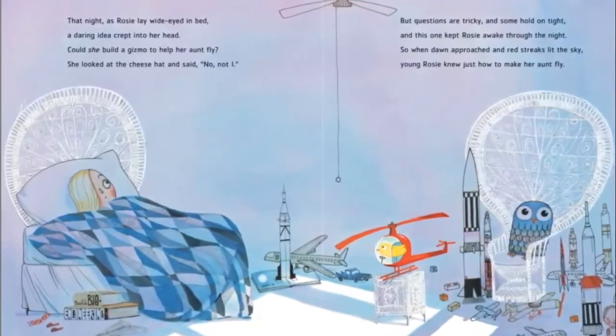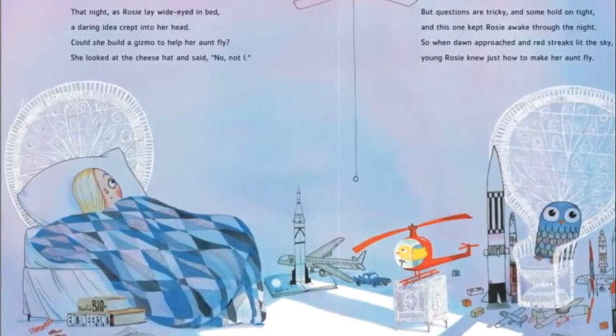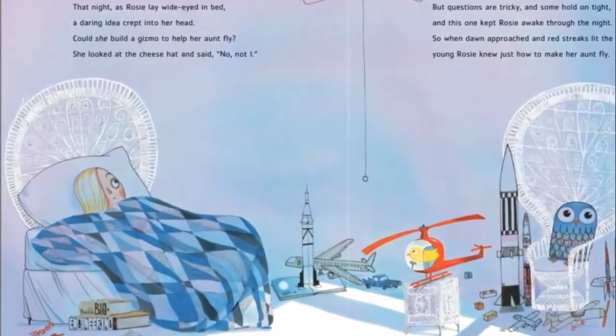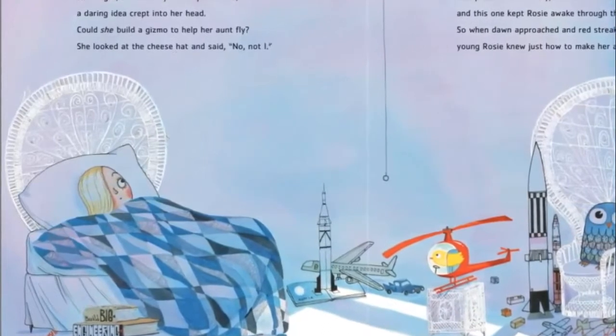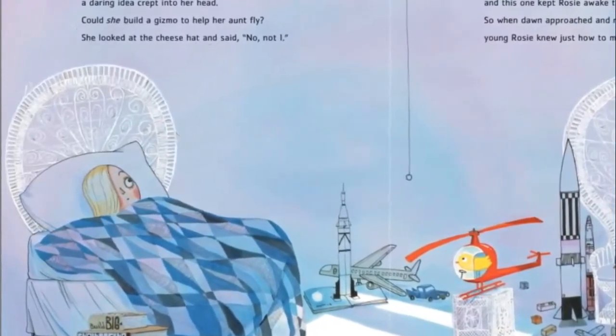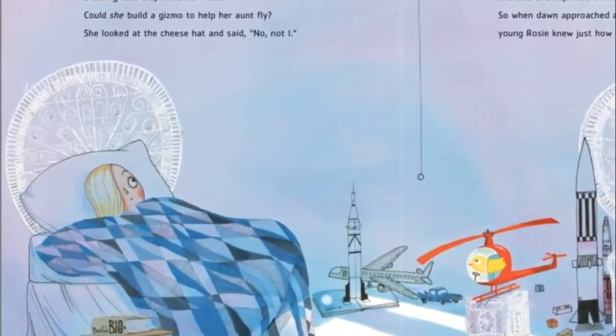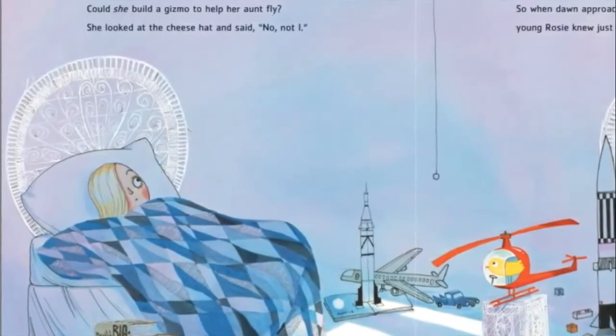Could she build a gizmo to help her aunt fly? She looked at the cheese hat and said, No, not I. But questions are tricky and some hold on tight and this one kept Rosie awake through the night. So when dawn approached and red streaks lit the sky, young Rosie knew just how to make her aunt fly.